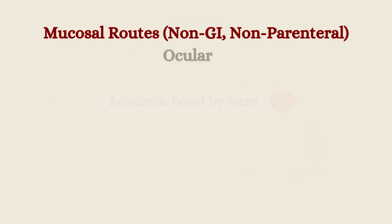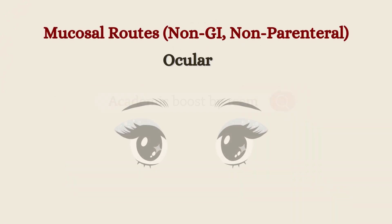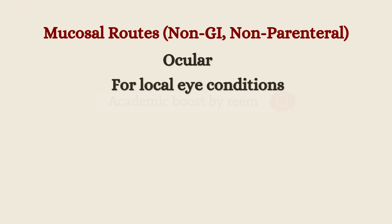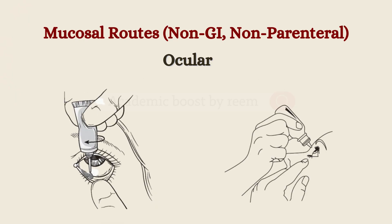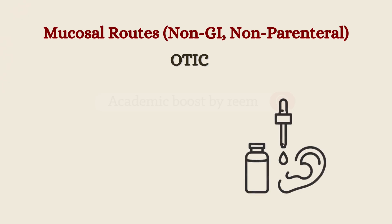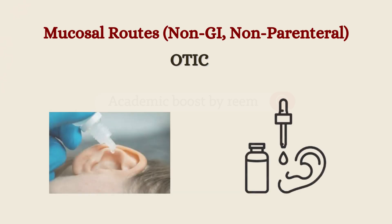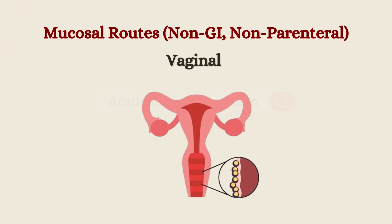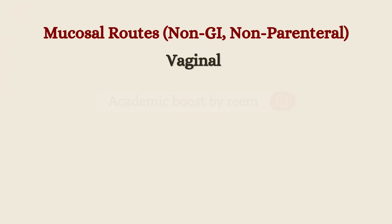The ocular route is when the drug is administered into the eyes, usually for local eye conditions, as eye drops or eye ointment. The otic route is when the drug is administered into the ears as ear drops.